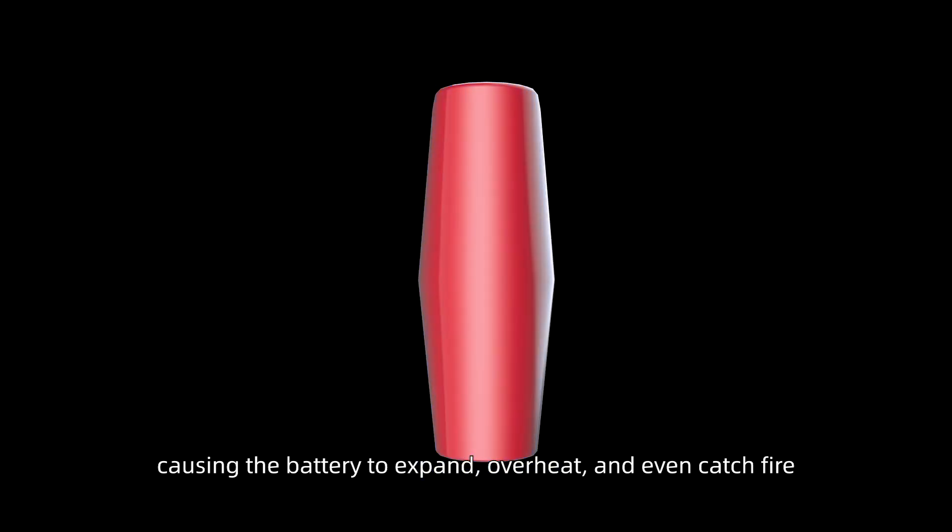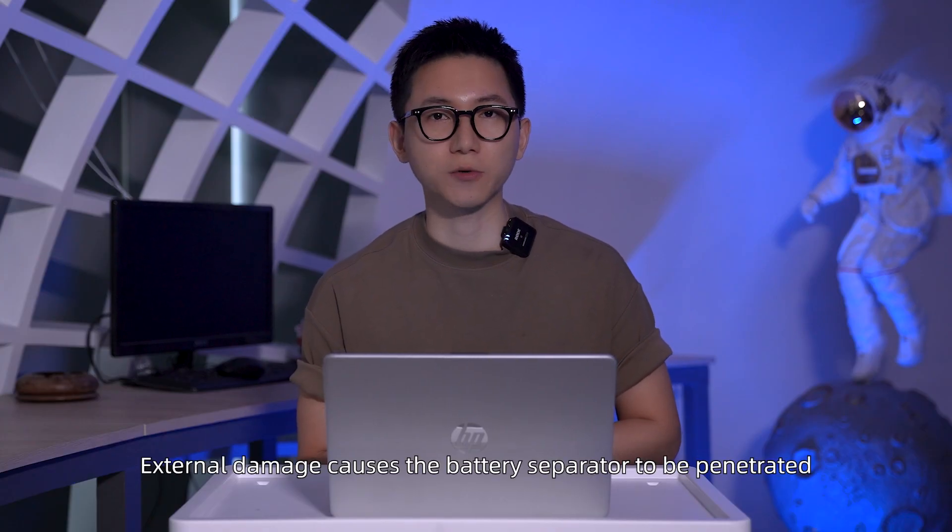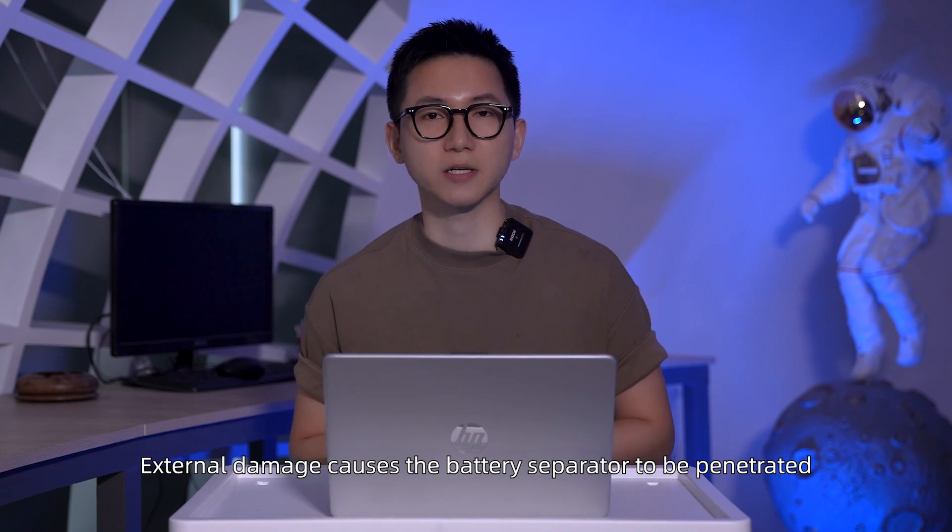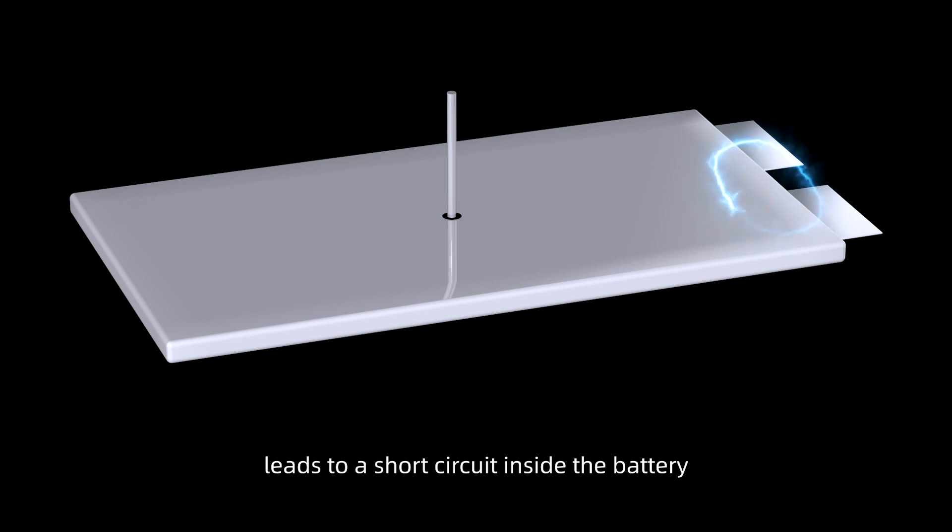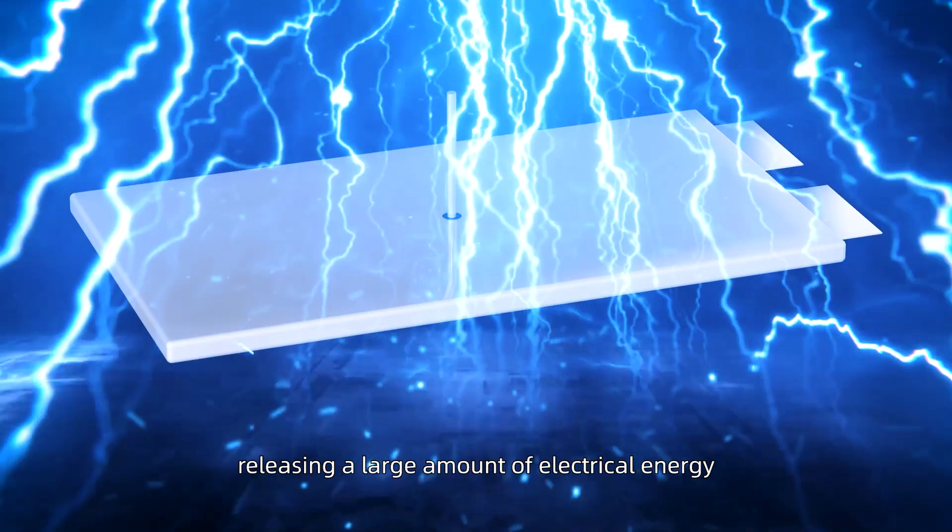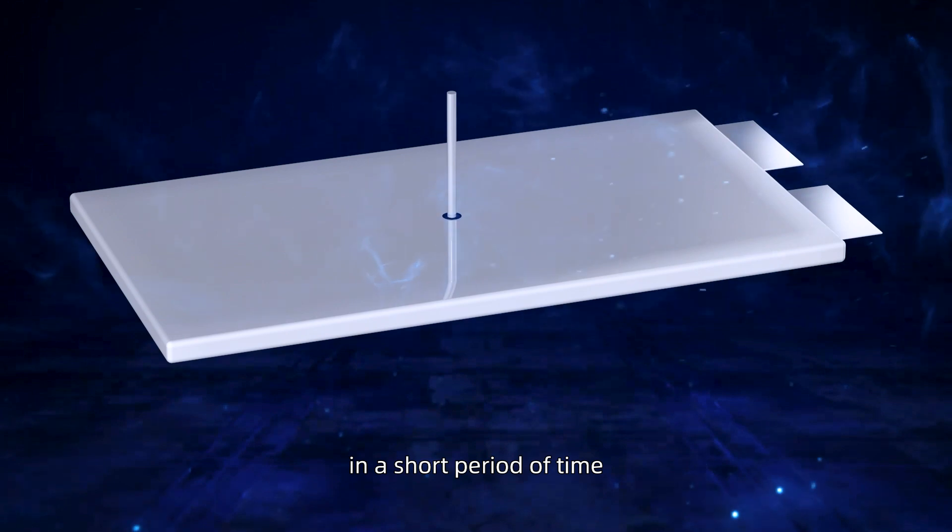Second, external damage causes the battery separator to be penetrated, and direct contact between the positive and negative poles leads to a short circuit inside the battery, releasing a large amount of electrical energy in a short period of time, leading to thermal runaway of the battery.